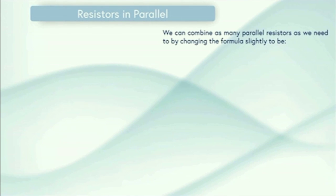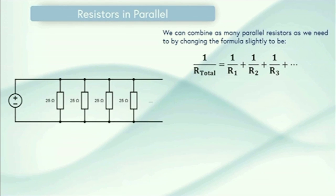We can combine as many parallel resistors as we need to by changing the formula slightly to be 1 over R_total, which is going to be R_total is our single value of resistor, is equal to 1 over R1 plus 1 over R2 plus 1 over R3 and so on until you've put all of your resistor values in. This is what it would look like in a circuit. We've got many resistors now connected in parallel and it looks a little bit like a ladder.